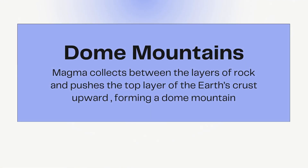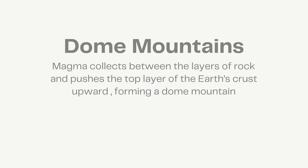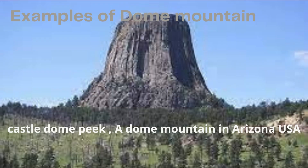Dome mountains form when magma collects between the layers of rock and pushes the top layer of the earth's crust upward, forming a dome mountain. An example is Castle Dome Peak, a dome mountain in Arizona, USA.